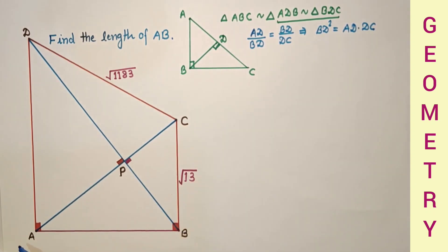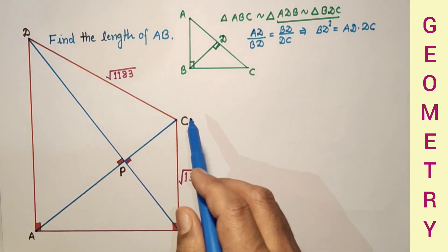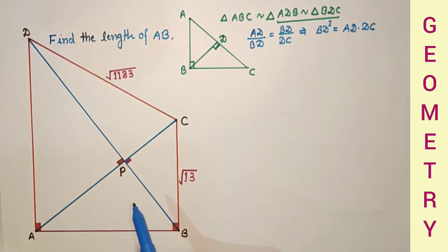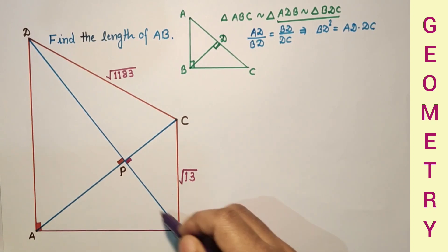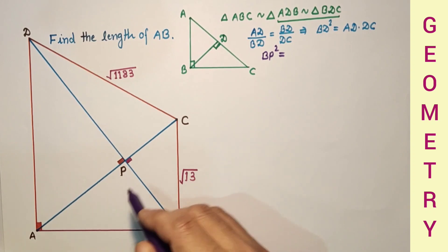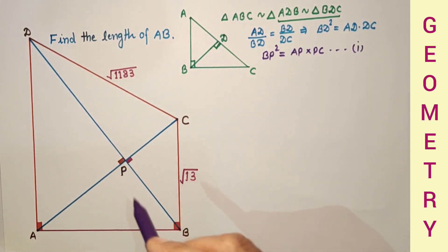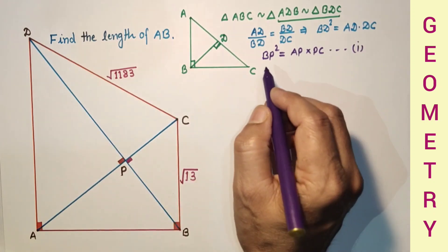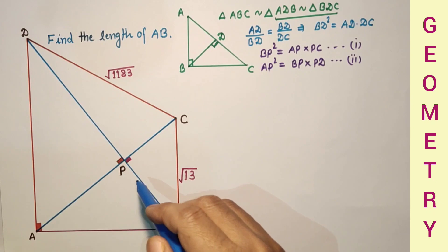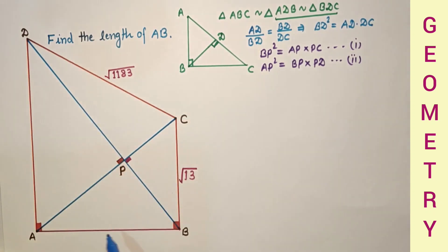Using this fact, in triangle ABC with sub-triangles APB and BPC, and in triangle ABD with sub-triangles APB and APD, we will get two results: BP squared is equal to AP into PC, and AP squared is equal to BP into PD. In this triangle, BP is the geometric mean of AP and PC, and in this triangle, AP is the geometric mean of BP and PD.